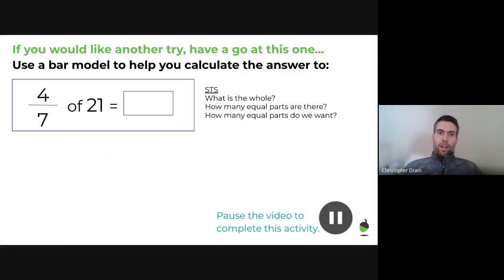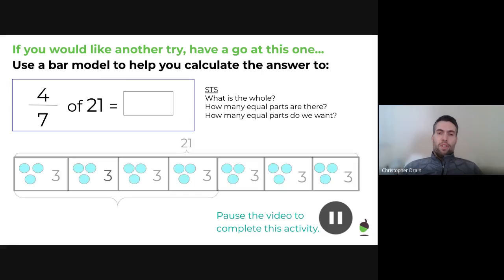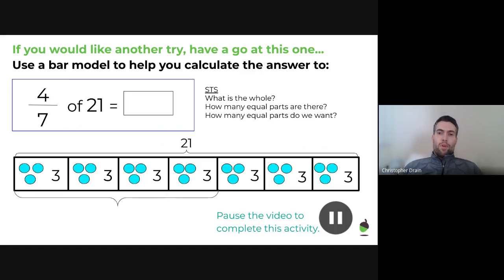Right, one more for you to try. Pause the video here and have a go at drawing this one out. Excellent. Okay. So, hopefully, this time, you drew a bar model. It was worth 21 altogether. And when you distributed those 21 dots, there was three in each section. We want four sevenths, and therefore, four times three is going to be equal to 12. Or three add three add three add three is going to be equal to 12 as well. Did I miss out an extra three there? Possibly.